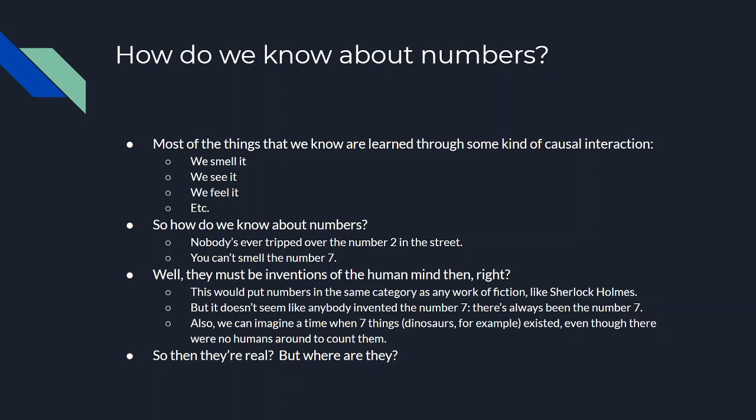How do we know about numbers? Most of the things we know are learned through some kind of causal interaction — we smell something, we see something, we feel something, and that's how we learn about it. But you can't do that with numbers. Nobody's ever tripped over the number two in the streets; you can't smell the number seven. So most people naturally conclude that numbers must just be inventions of the human mind.